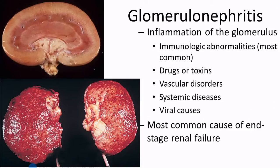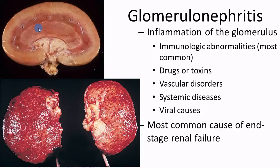Glomerulonephritis is inflammation of the glomerular tissue. You lose the differentiation of the pyramids. Causes include medications, certain chemotherapy drugs, antibiotics, and radiologic imaging dyes, which can sometimes damage the glomerulus. Glomerulonephritis is actually one of the most common causes of end-stage renal failure.